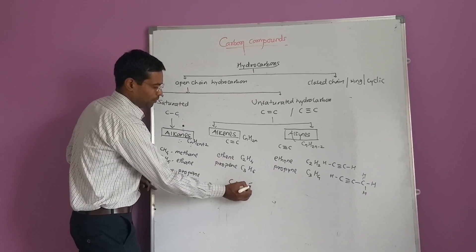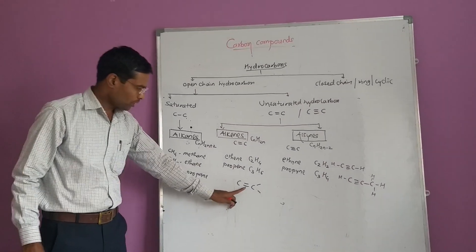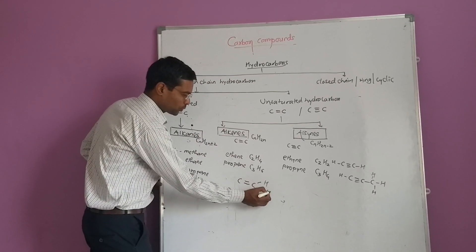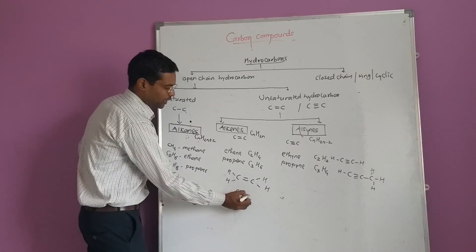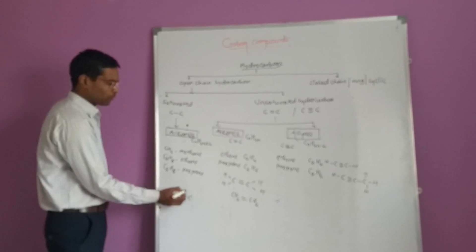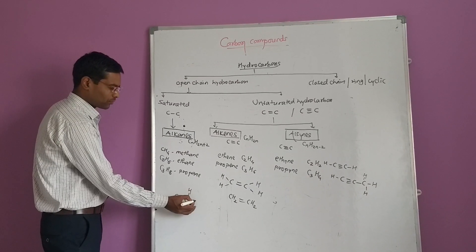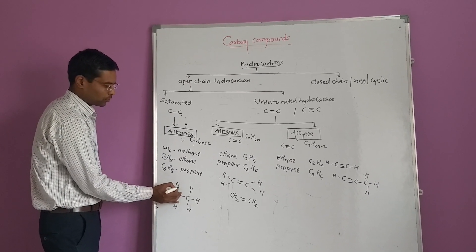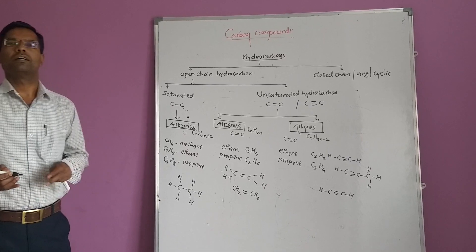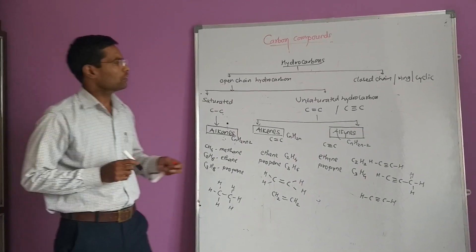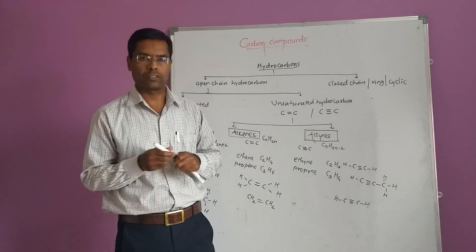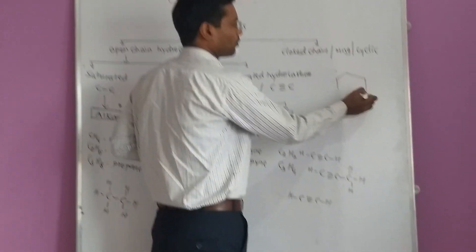Remember that each carbon always forms 4 bonds with other atoms. The structural formula of ethene is CH2=CH2. The structural formula of ethane is CH3-CH3, where the remaining three valences of each carbon are satisfied with three hydrogen atoms. So these are the open chain hydrocarbons. Closed chain hydrocarbons are also classified as homocyclic, heterocyclic, alicyclic, and aromatic. We are taking a simple example here according to the 10th standard syllabus.